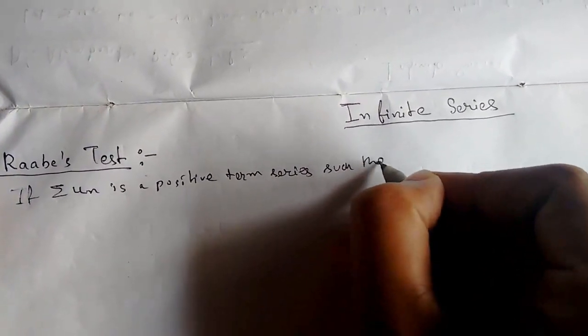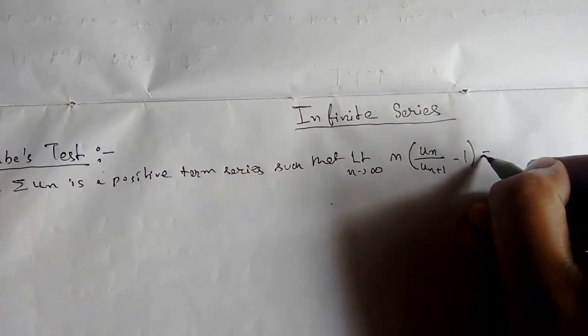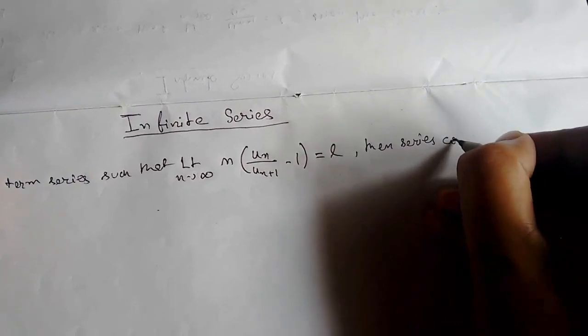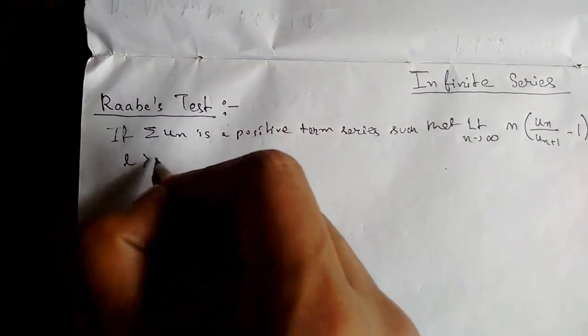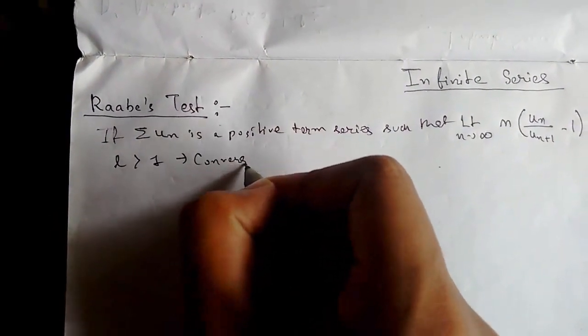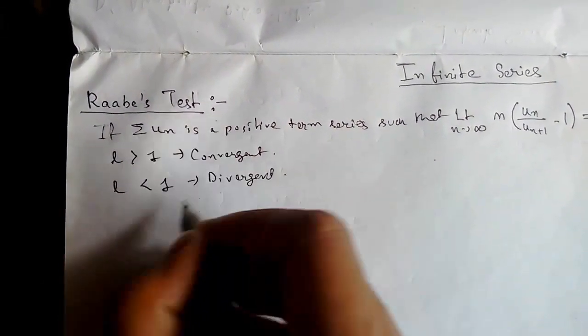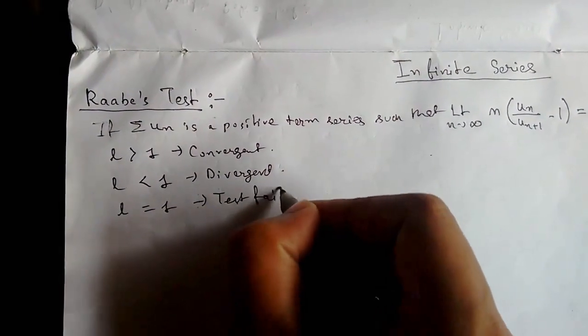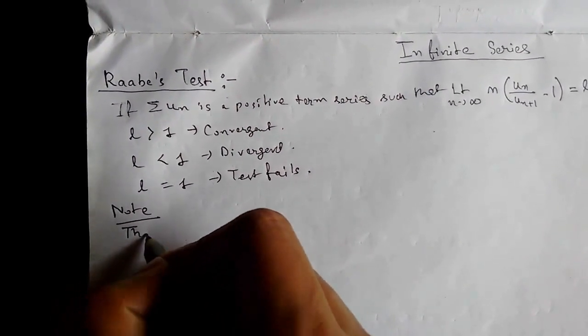such that limit n tending to infinity, n times (UN/UN+1 - 1) equals L, then we have three conditions: L greater than 1 means convergent, L less than 1 means divergent, and L equals 1 means the test fails.